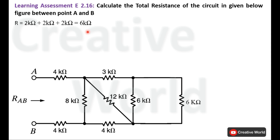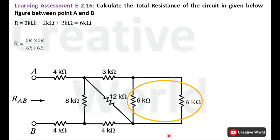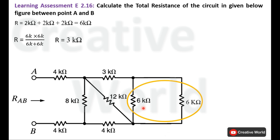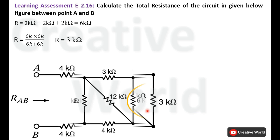Now, these two 6 Kilo Ohm resistances are connected in parallel. We can calculate their equivalent resistance using the product-over-sum formula. The equivalent resistance is 3 Kilo Ohm. We can replace these two 6 Kilo Ohm resistances with their equivalent value of 3 Kilo Ohm, and modify the circuit.